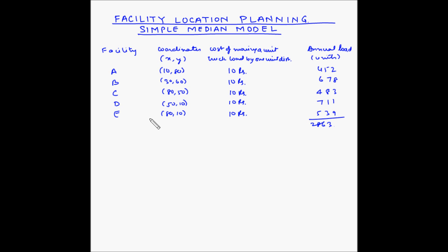Let us consider the following question: suppose you want to locate a new plant that will annually receive shipments of raw material from locations A, B, and C. This new plant will create finished goods that must be shipped to two distribution warehouses, D and E. So where would you locate the new plant? For each facility we have been given the x and y coordinates, the cost of moving a unit truckload by one unit distance, and the annual load in units being shipped from A, B, and C to the new plant and from the new plant to D and E.